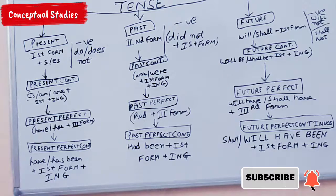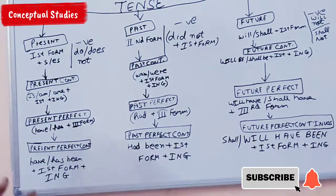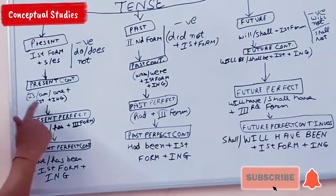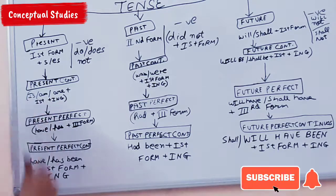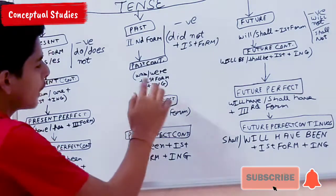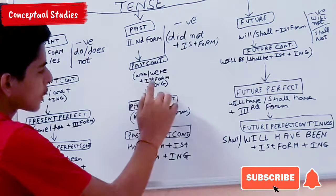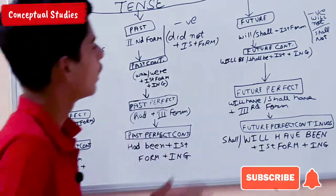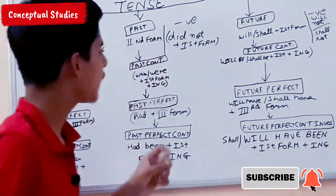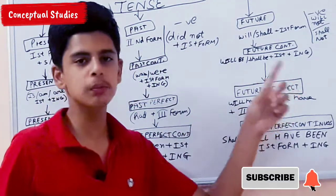For continuous tenses: Present Continuous uses 'is/am/are' plus first form plus '-ing' — for example, 'He is playing.' Past Continuous uses 'was/were' plus first form plus '-ing.' Future Continuous uses 'will be' or 'shall be' plus first form plus '-ing'.